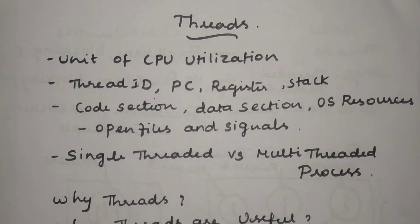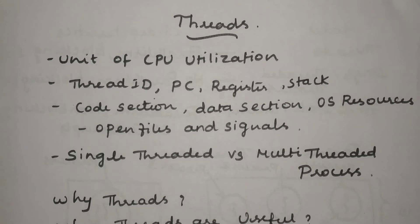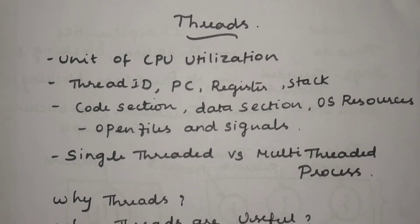In a traditional operating system, we have processes which consist of only one thread. A thread is what you perform when executing a single task. Suppose in the same example — we have one process that is going to print one page of a particular file. How many operations does it have to perform? All those operations, which we can also call tasks. A sequence of tasks is performed for executing that particular process. A single task of execution is said to be a thread.